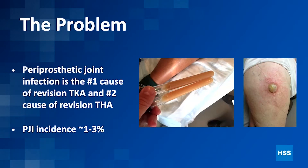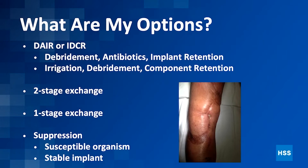No relevant disclosures here. The problem is periprosthetic joint infection — number one cause of revision total knee, number two cause of revision total hip — with an incidence of one to three percent in your practice. So you are going to see this. Like we heard, don't bury your head in the sand.